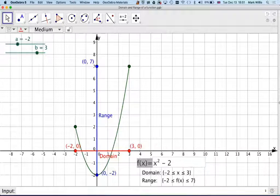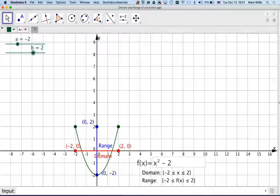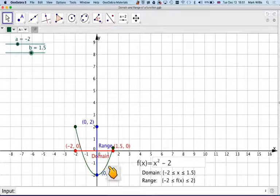So you just need to be very careful when you've got a bit of a quadratic. If we move b, for example, now look, b is now at this point here. So the domain, sorry, is from minus 2 to 1.5. However, the range is going to be from minus 2 to 2.